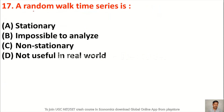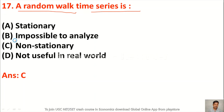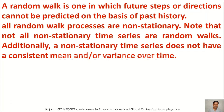Question 17: A random walk time series is — option A stationary, option B impossible to analyze, option C non-stationary, option D not useful in the real world. A random walk time series is non-stationary, so option C is correct. A random walk is one in which future steps or directions cannot be predicted on the basis of past history. All random walk processes are non-stationary.